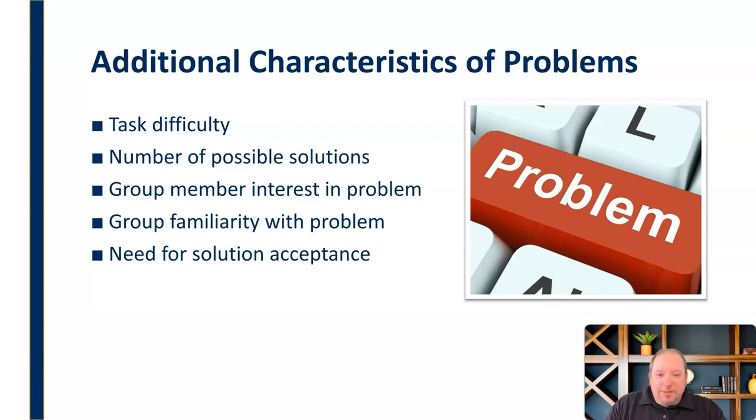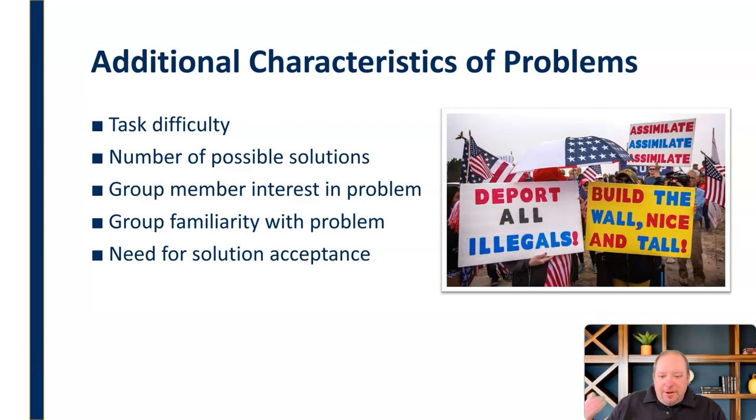And then the need for solution acceptance—what is the need that's there? So we see these in all kinds of problems, ranging from things like immigration. It's something that's really challenging. There's a variety of things that we can and maybe should do to solve this problem. There's a question of whether or not people really want to solve the problem, or how familiar they are with the problem, and then what's the need for that acceptance. Is it important that people accept that solution or not?